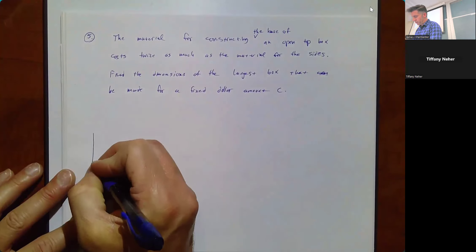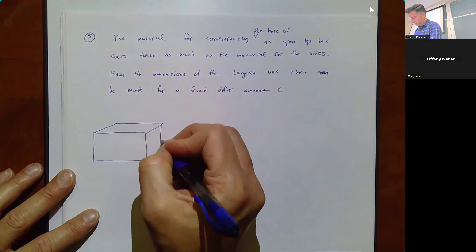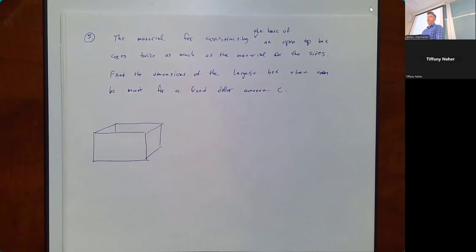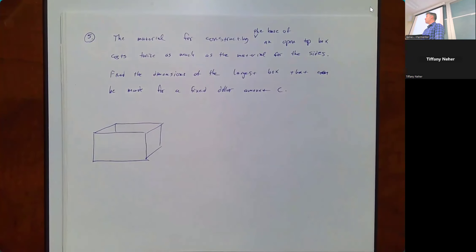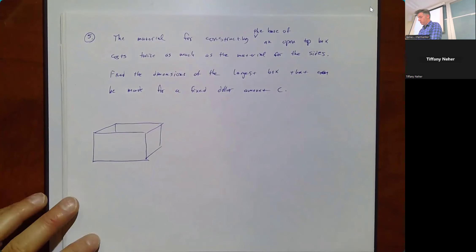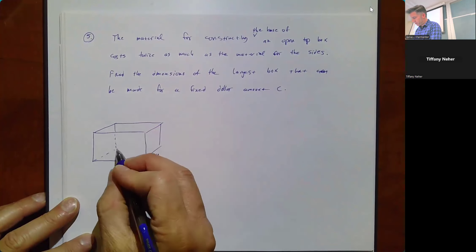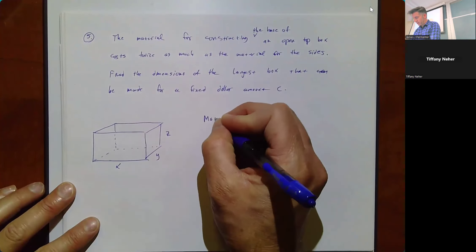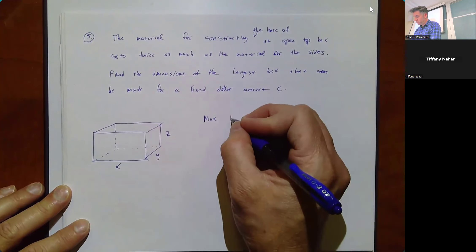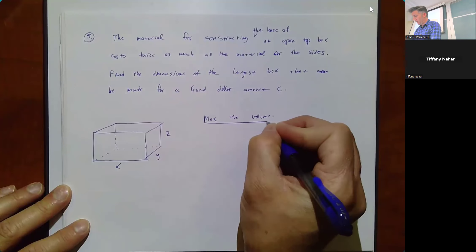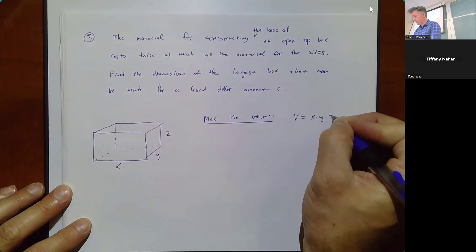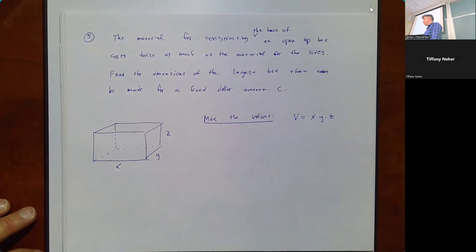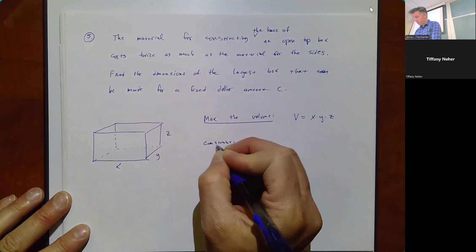Let's draw a picture. Here's our open-top box — unlike problems you may have seen before, the base is not necessarily square. The base has dimensions x and y, and the height is z. We want to maximize the volume V = xyz. Since we can't yet maximize a function of three variables, we need to eliminate one using a constraint — the cost equation.